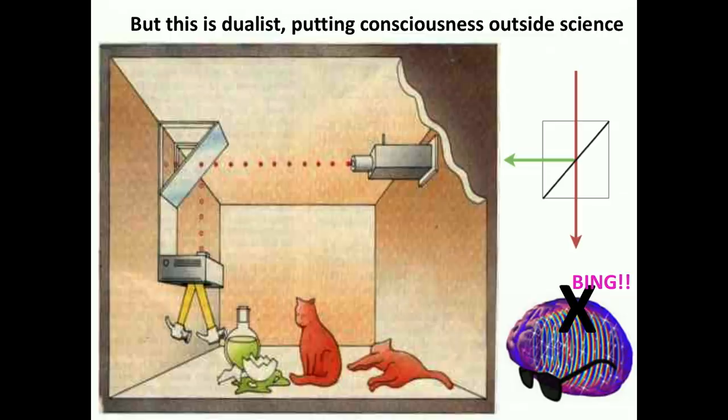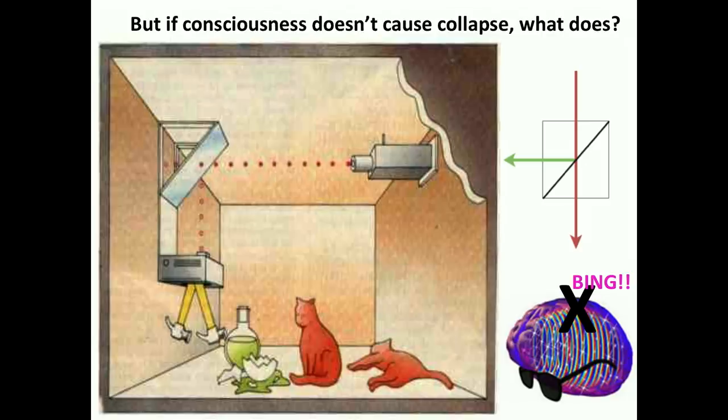So let's get rid of the observer as a way to cause collapse, because it doesn't explain consciousness, and that's what we want. And besides, this is a science of non-duality, not duality. But if consciousness doesn't cause collapse, what does?